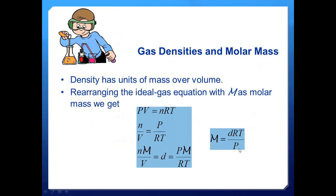We now go to gas densities and molar mass. Molar mass is the mass of one mole, with units of grams per mole. Gas density is expressed in units of mass per unit volume — the same form as for liquids and solids. From the ideal gas law PV = nRT, transferring variables gives n/V = P/RT. The quantity n/V is moles per unit volume.